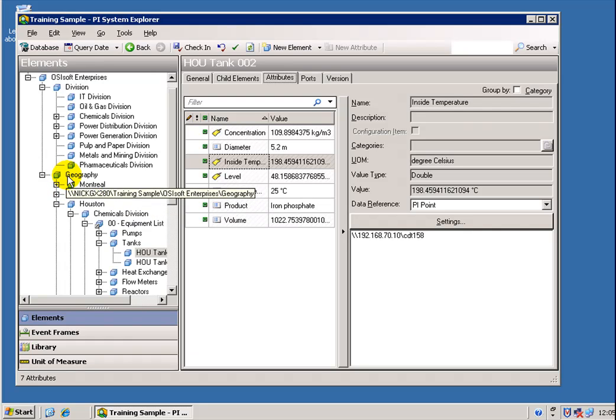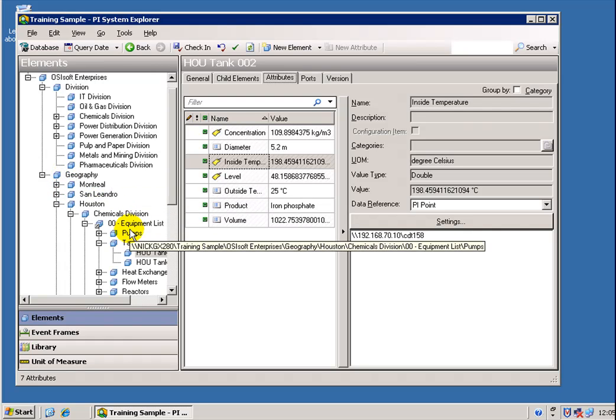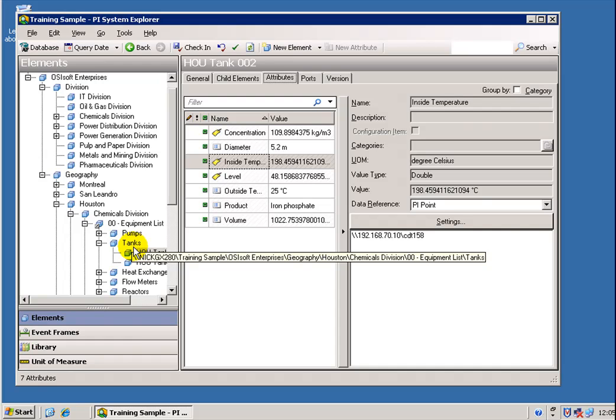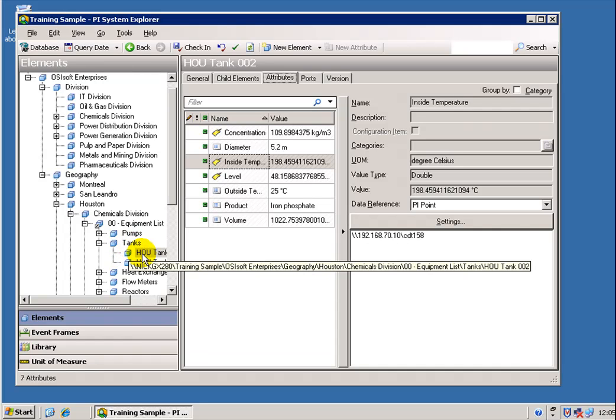Now, so what we're seeing really here is a structure that we create in AF, that is stored in SQL Server, that leads us, or points us, to data in the PI Server.